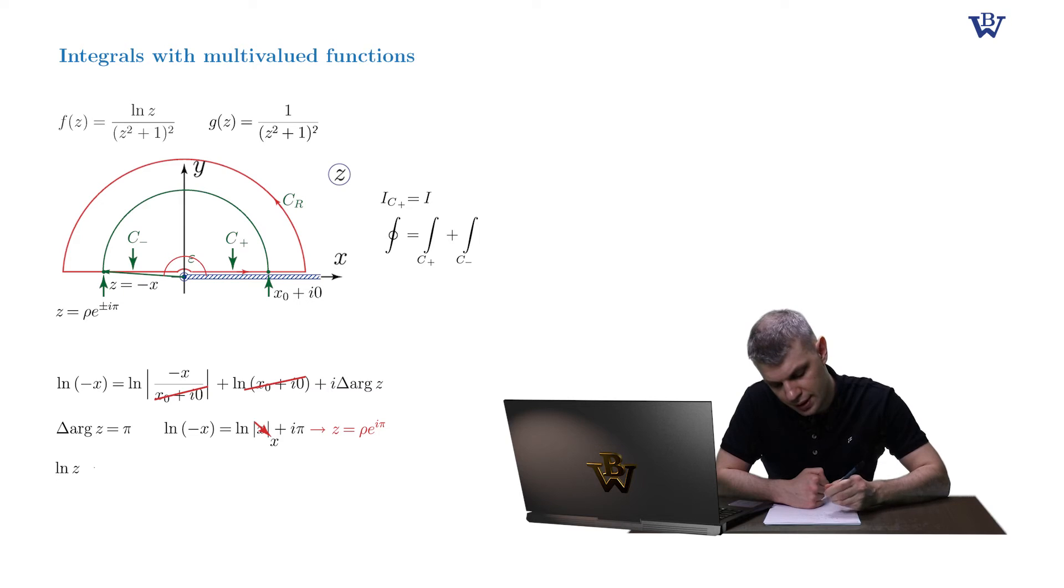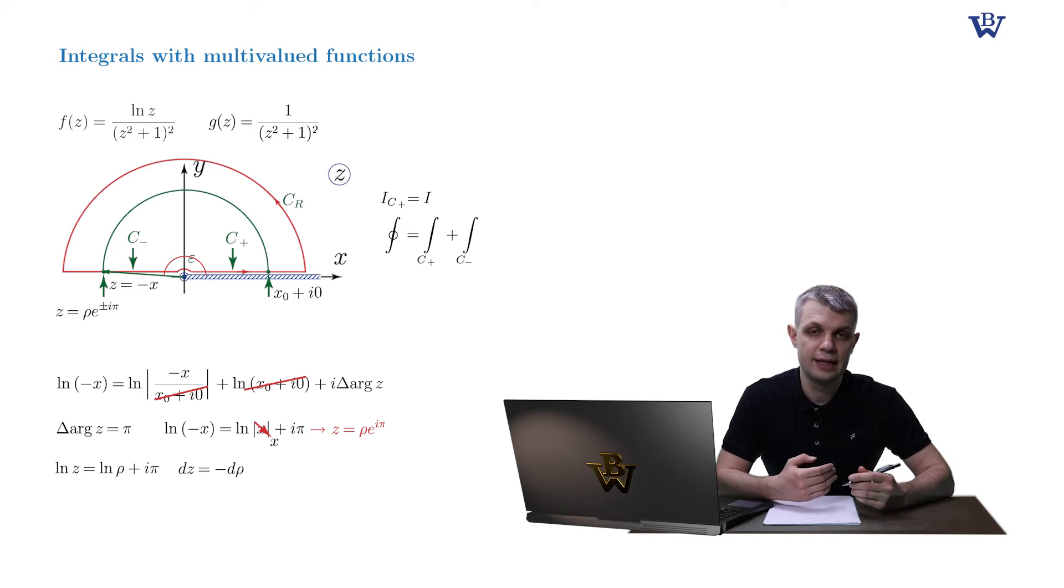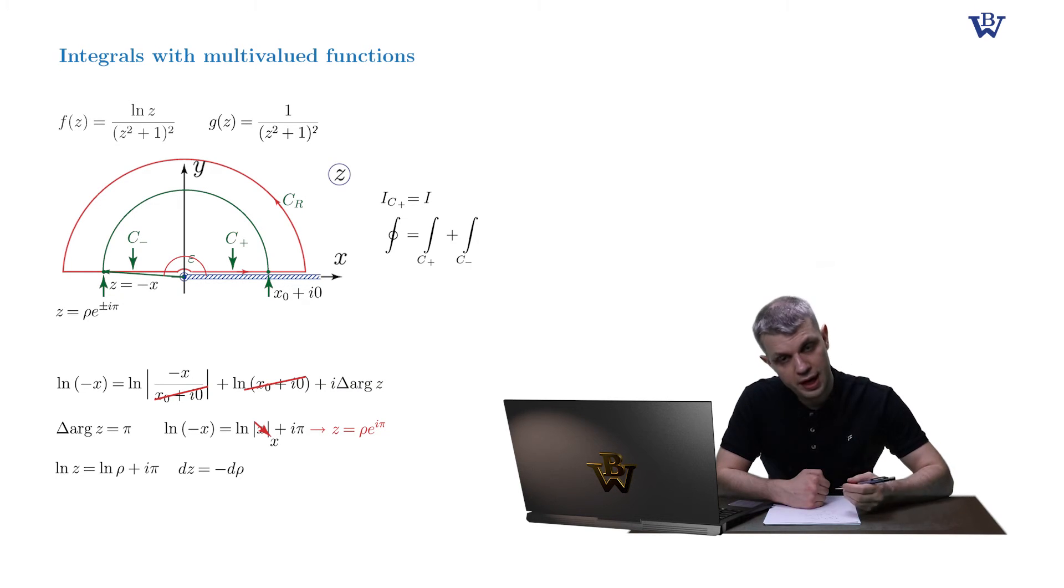Logarithm of z is equal to log of rho plus i pi. dz is simply minus d rho. Due to the fact that the single valued function is even, it doesn't change when we plug in z equals minus rho into it. This is where the evenness of the single valued function comes on stage.